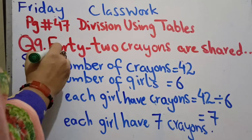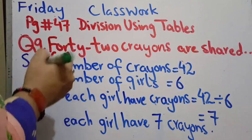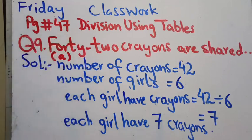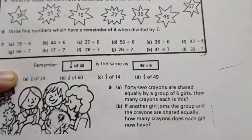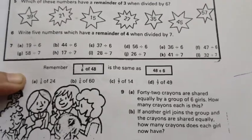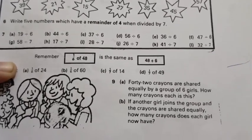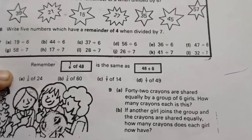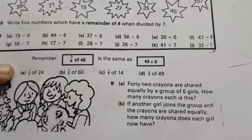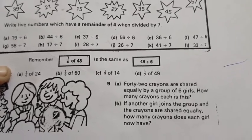After that we will start part B. Now part B of question number 9: If another girl joins the group and the crayons are shared equally, how many crayons does each girl now have?